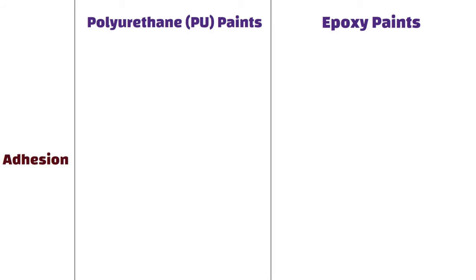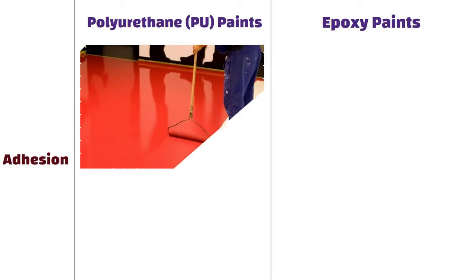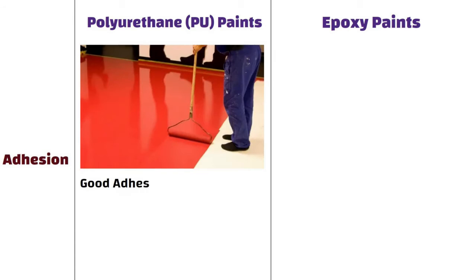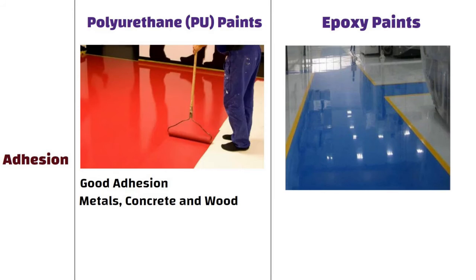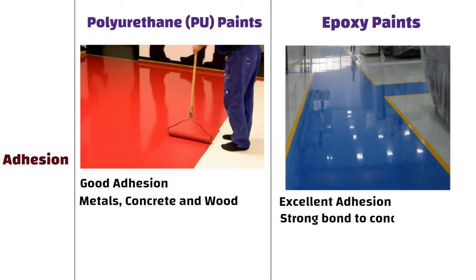Adhesion. PU paints have good adhesion to a variety of surfaces, including metals, concrete and wood. Whereas epoxy paints generally have excellent adhesion, providing a strong bond to surfaces such as concrete and metal.